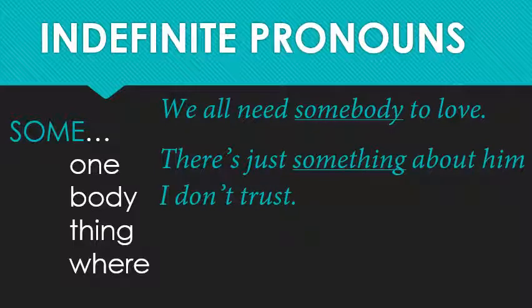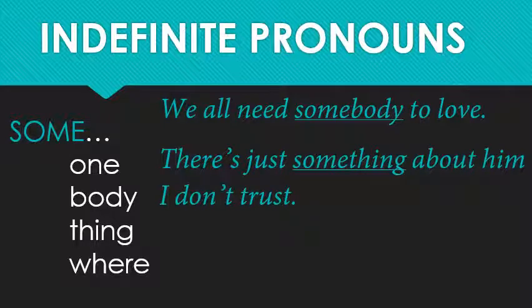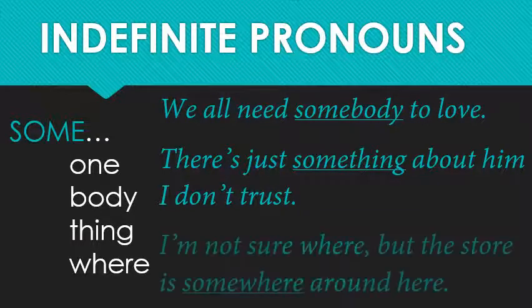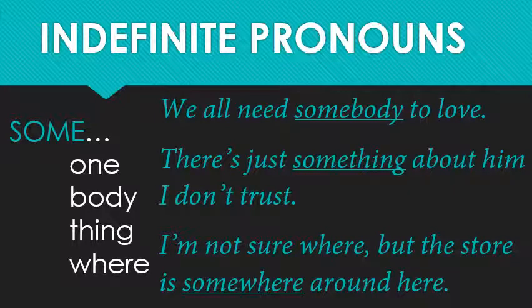There's just something about him I don't trust — this is something people say. I can't quite put my finger on it. There's something — I don't know what, but something. I can make a limited list: the way he walks, the way he talks, the way he looks. It's not something random like the horse that won the Kentucky Derby. It's something within a relatively limited selection. I'm not sure where, but the store is somewhere around here. I have an idea about where the store should be, but I can't pinpoint it exactly — that's why I say somewhere.